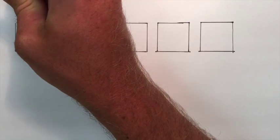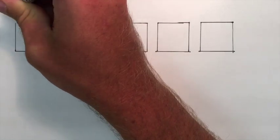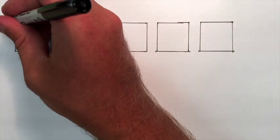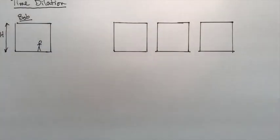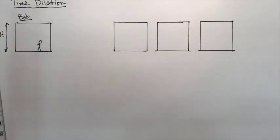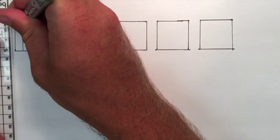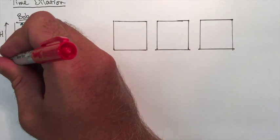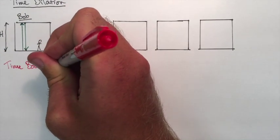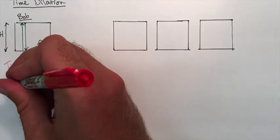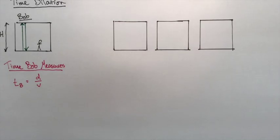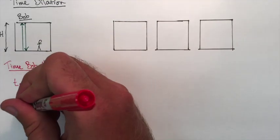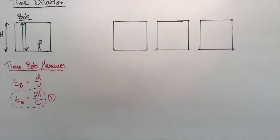If we want to put a number to time dilation, we have to derive a formula to show the different amounts of time that one person might observe versus another. Pretend we have a box, which is the spaceship here, and Bob's on the spaceship. He shines a bright light from the bottom to the top and it reflects and comes back down. The spaceship has a height of h. Because light travels at a constant velocity, the time that Bob is going to measure—we can use the constant velocity formula. So it'd be the distance divided by the velocity. The distance would be 2h, and the velocity is the speed of light c, so we'll call it equation number one.